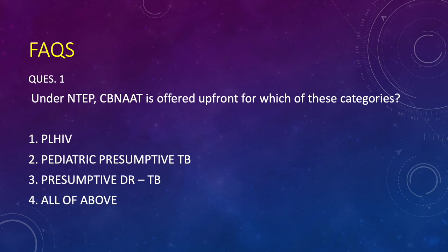A common exam question: under the National TB Elimination Programme, where do we offer CBNAAT upfront — even before microscopy — to: people living with HIV, pediatric presumptive TB, presumptive drug-resistant TB, or all of the above? All of these may have a lesser bacterial load, and in presumptive drug-resistant TB, you want to know upfront whether rifampicin resistance is present to decide whether to suspect MDR. The answer is all of the above. You can upfront send all of these for CBNAAT.